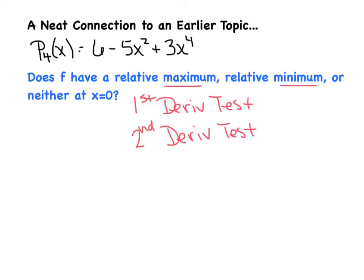This happens to be one of those cases. If you wanted to use the first derivative test and think zero is a critical point, you'd pick something like negative one and plug it into f prime. But we don't know what f prime is, so we don't have anything to plug into. We'd also pick something like one to test the other side of zero, but again we don't have f prime. So we have to scrap the first derivative test, unfortunately — the one 99% of us are more comfortable with.